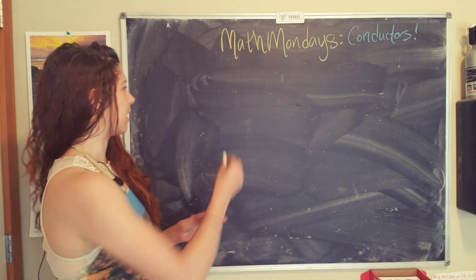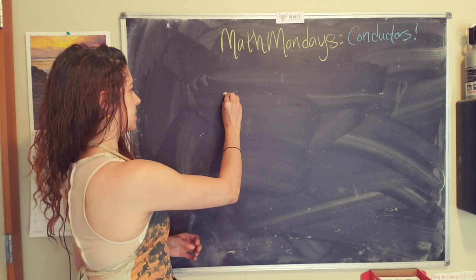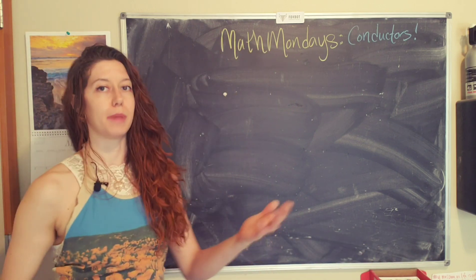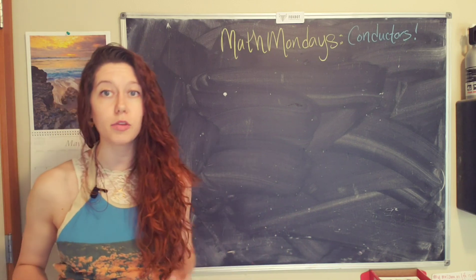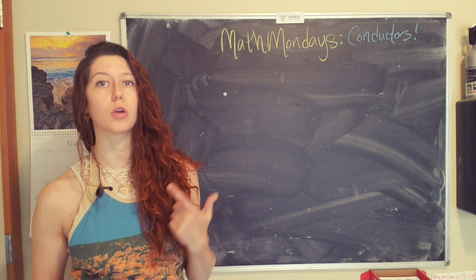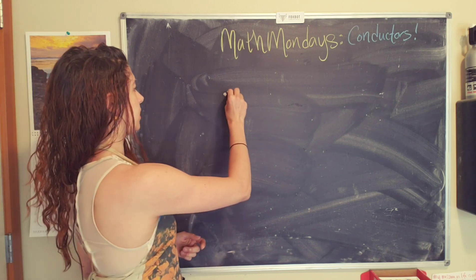So atoms have a nucleus in the center, which is made up of protons and neutrons. Protons are positively charged and neutrons are neutrally charged. So you have your nucleus, which I'm going to draw in white, and it is very tiny and very massive.